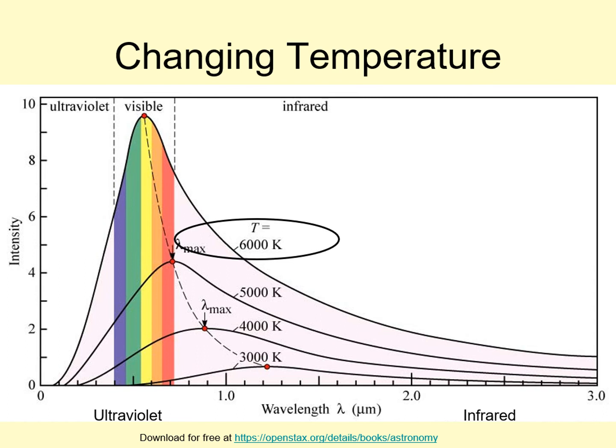Now compare this to the yellow curve, the one for a 6000 Kelvin star, like our Sun. This curve is higher at all wavelengths, telling us that the 6000 Kelvin star is brighter at all wavelengths.